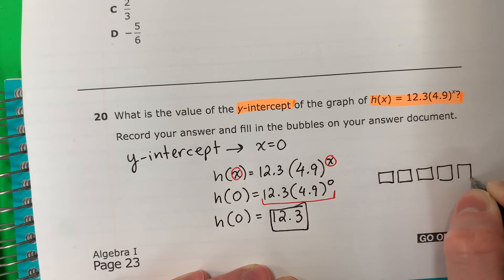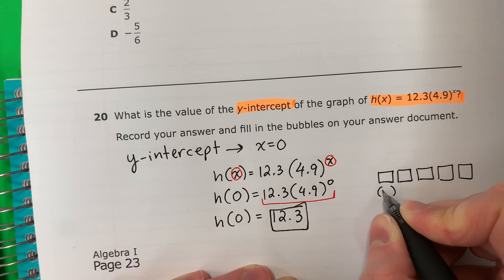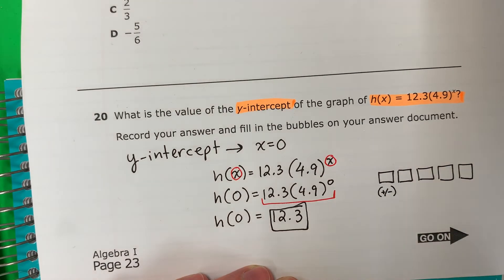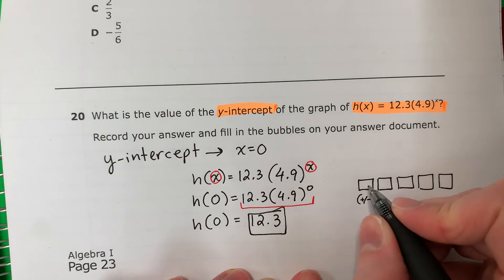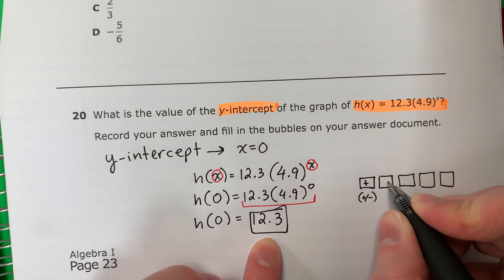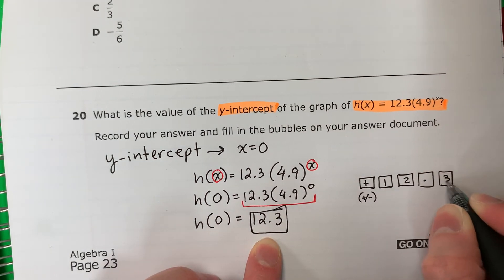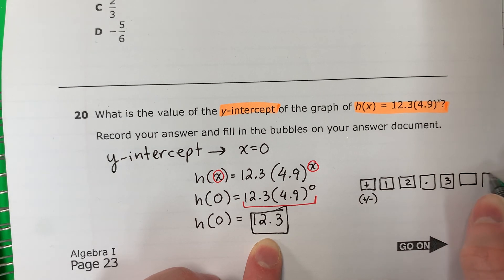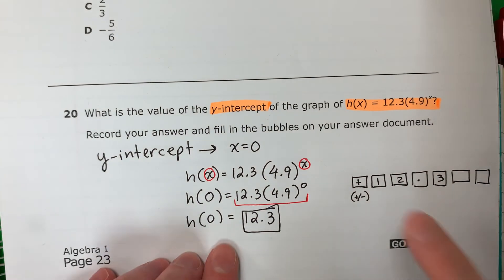You're going to have boxes like this. The first box is positive or negative. La primera caja es positivo o negativo. You put plus. And then you're going to write in the number. 12.3. And I know there might be more, but don't write any more. So it would be positive 1, 2, 0.3.